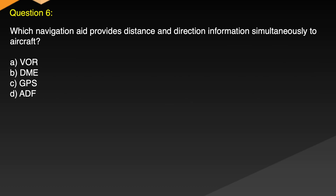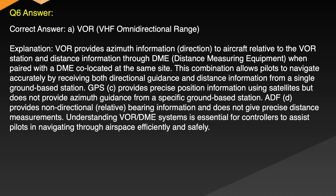Question 6. Which navigation aid provides distance and direction information simultaneously to aircraft? A. VOR, B. DME, C. GPS, D. ADF. Correct answer: A. VOR, VHF Omnidirectional Range. Explanation: VOR provides azimuth information — direction to aircraft relative to the VOR station — and distance information through DME, Distance Measuring Equipment, when paired with a DME co-located at the same site.